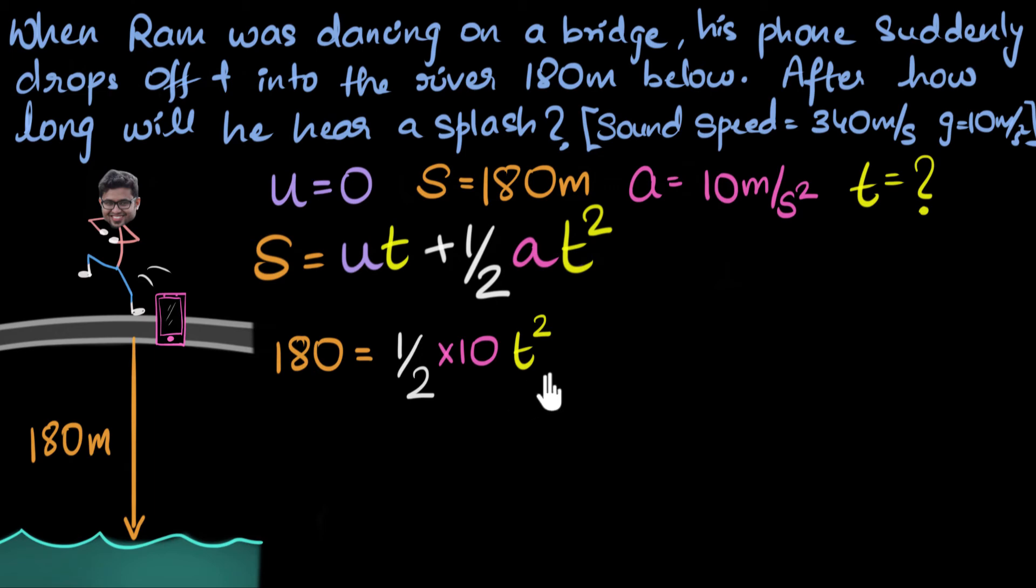And now we just have to do the algebra to get t squared. So let's see. Two goes five times, so this goes five times over here. And now to calculate t squared, I want to get rid of this five from the right side, so I'll divide by five on both sides. 180 divided by five is 36. So 36 equals t squared. And this means t is the square root of 36, which is six seconds. And there is our answer.